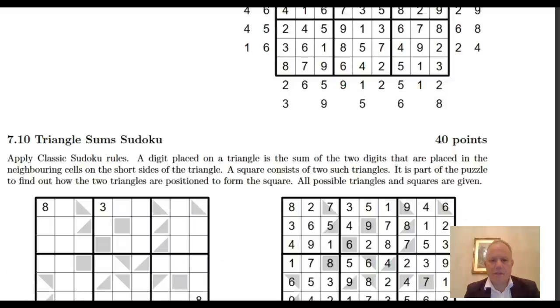Triangle Sums - a digit placed on a triangle is the sum of the two digits that are placed in the neighboring cells on the short sides of the triangle. What does that mean? Okay, so this seven is the sum of two and five on the side of the triangle here.